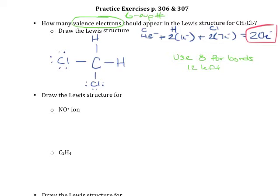When you draw your Lewis structure, it doesn't matter if your two chlorine atoms are next to each other or across from each other — it just matters that they're both attached to the carbon atom. That's the general pattern you should follow. Let's take a look at our next set of Lewis structures.